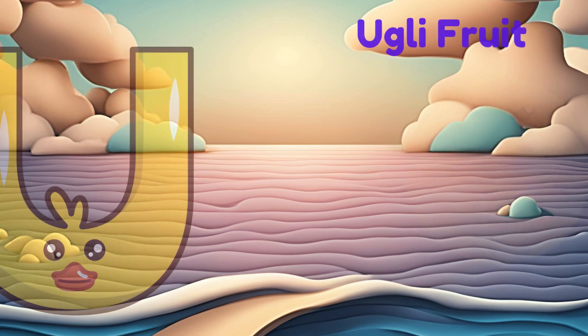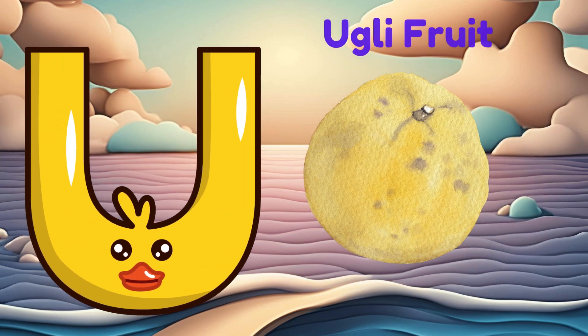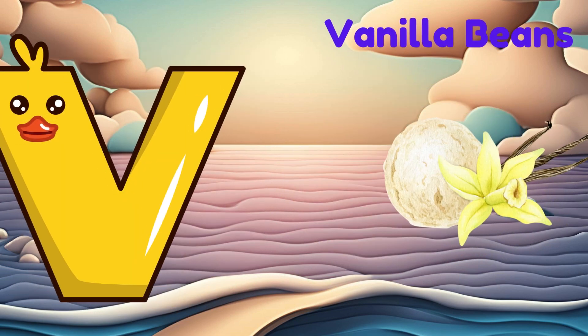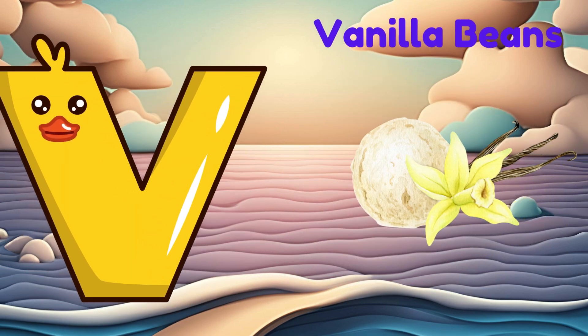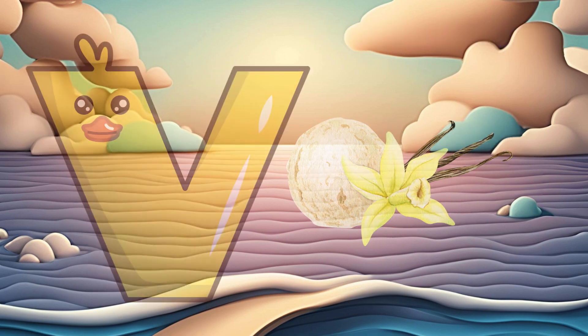U is for ugly fruit. U, u, ugly fruit. V is for vanilla beans. V, v, vanilla beans.